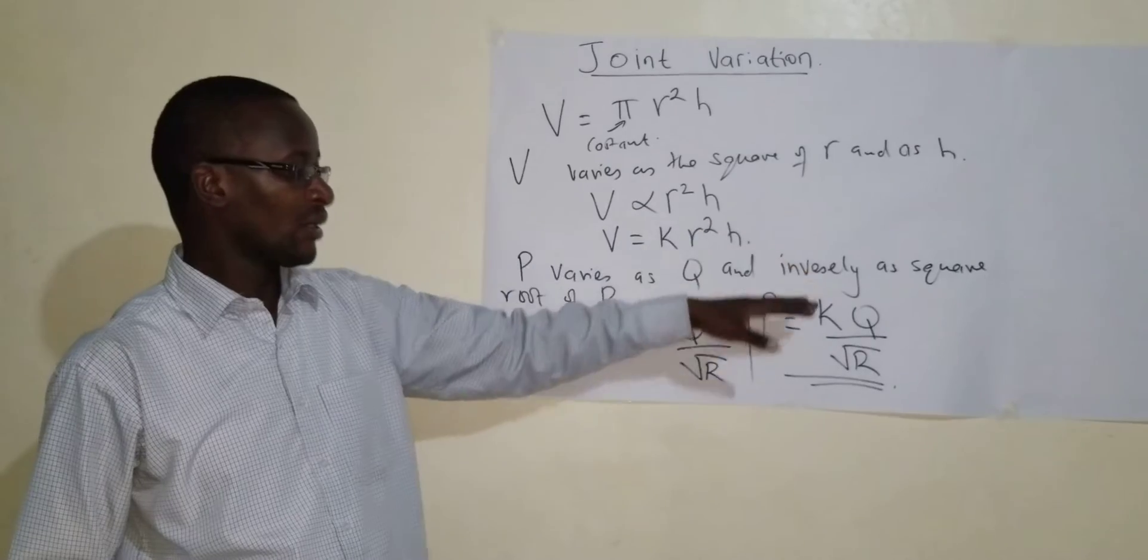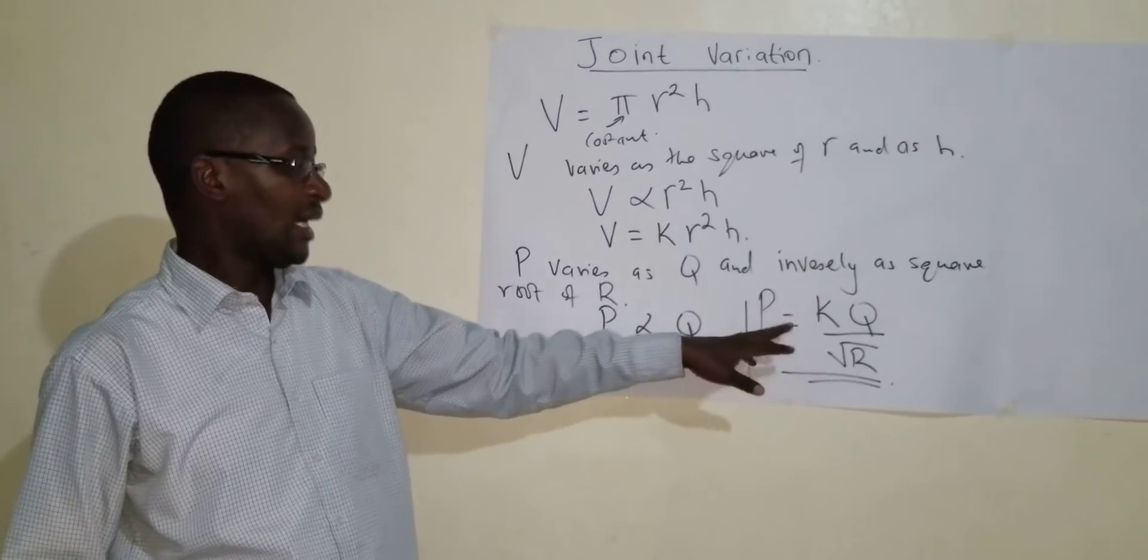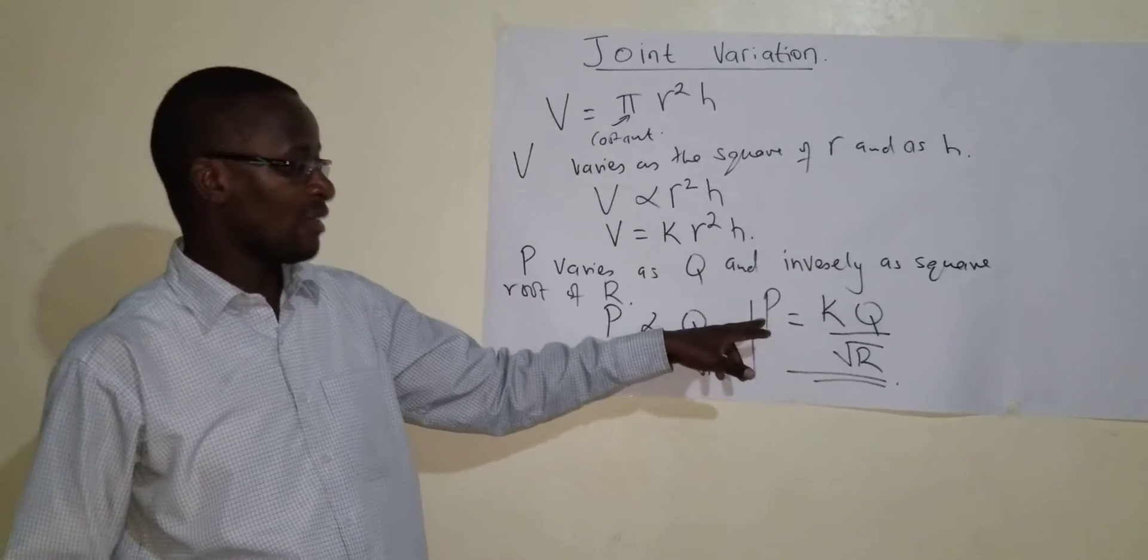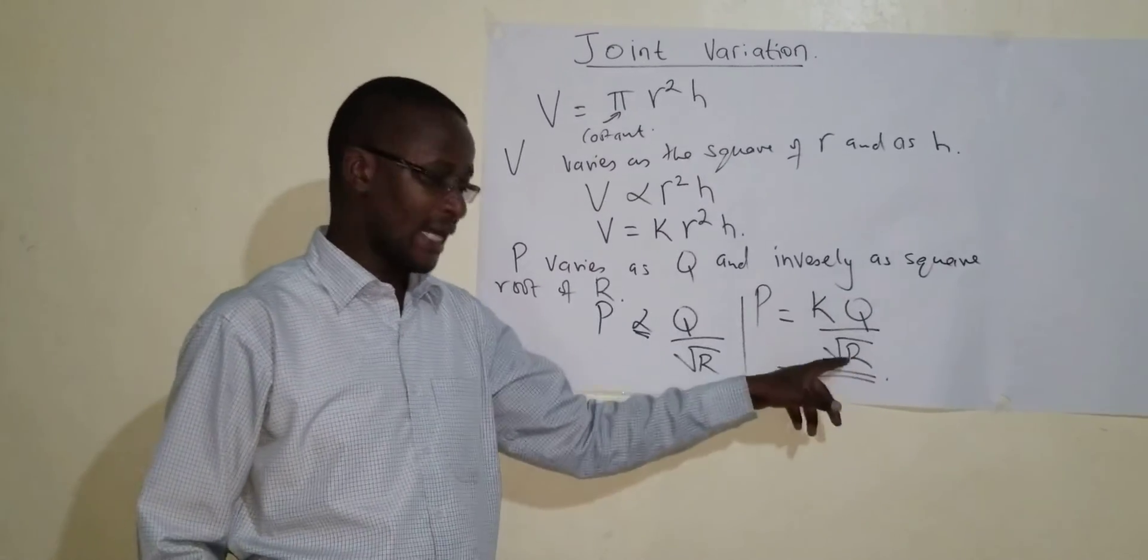So given more information about P, Q and R, you can be able to get the constant of proportionality K. And by solving, you can be able to get the equation relating P, Q and R.